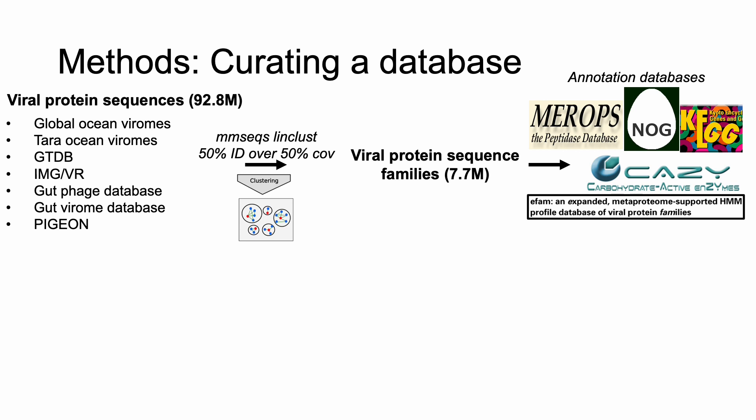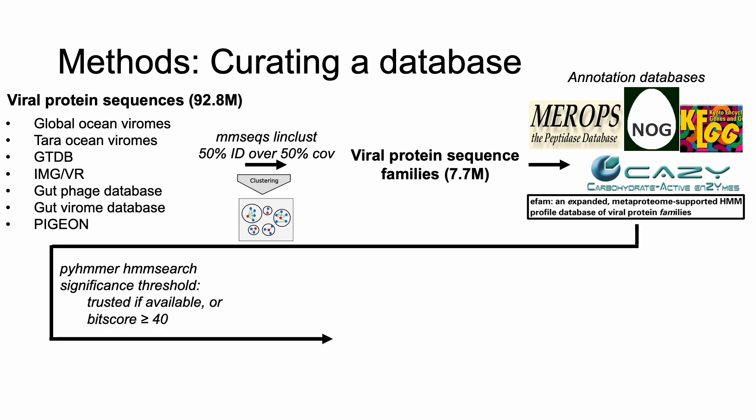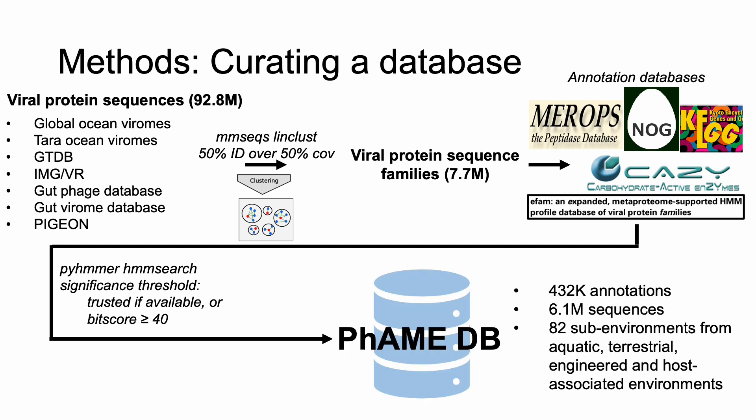These databases represent generic metabolic databases like KEGG and EggNOG, more specific metabolisms like MEROPS and CAZymes, also known as dbCAN2, and eFAM, which is an expanded view on viral protein families. Annotation was performed using a Python version of the HMMER tool called HMMSearch. This resulted in 400,000 annotations, representing 6 million sequences in total.